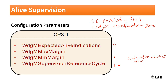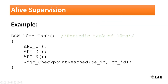The supervision reference cycle can be set to 1 if we want to evaluate the result in each 20 millisecond when the watchdog main function is called. For another example, if we have a supervised entity with a 100 millisecond period, then the supervision reference cycle could be 5, which is 20 ms times 5. For alive supervision indication, the supervised entity can call the WdgM_CheckpointReached API with a supervised entity ID and checkpoint ID. This call is required only once in the case of alive indication.